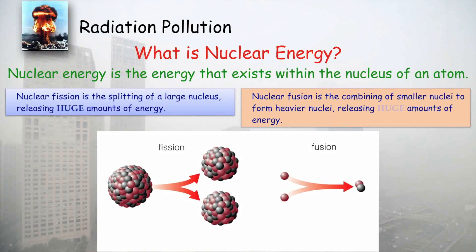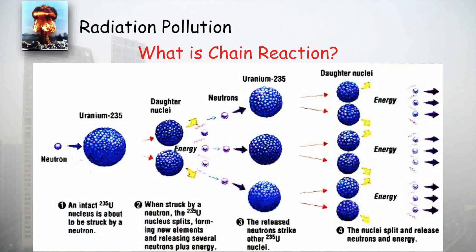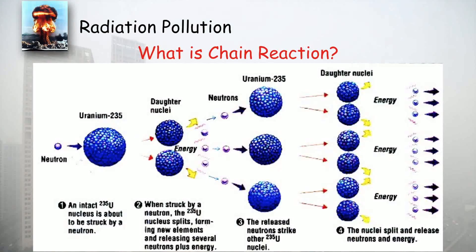A chain reaction means if we start a reaction with only one nucleus and it continues by itself, that is a chain reaction. For example, a neutron is used to break uranium-235, which breaks into two daughter nuclei and produces three more neutrons. These neutrons again break new uranium-235, and the reaction continues until no more uranium is available. This type of self-sustaining process is a chain reaction, and they are very difficult to stop.